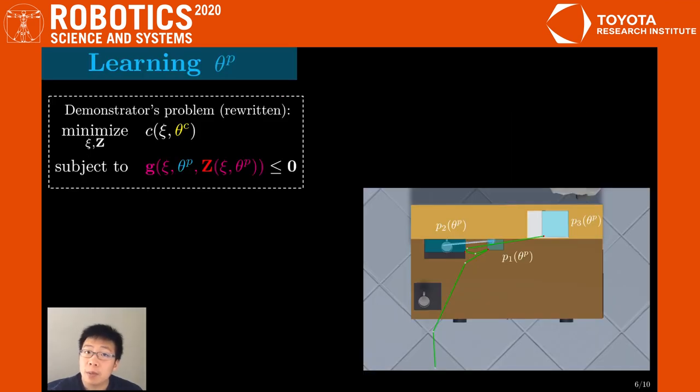Now, let's discuss how we can learn the AP parameters, assuming the structure is known. We can rewrite the demonstrator's problem, making z explicit. Now, let's assume the demonstrator chooses any feasible high-level plan z that satisfies the formula, and then finds a locally optimal low-level trajectory psi for that plan.